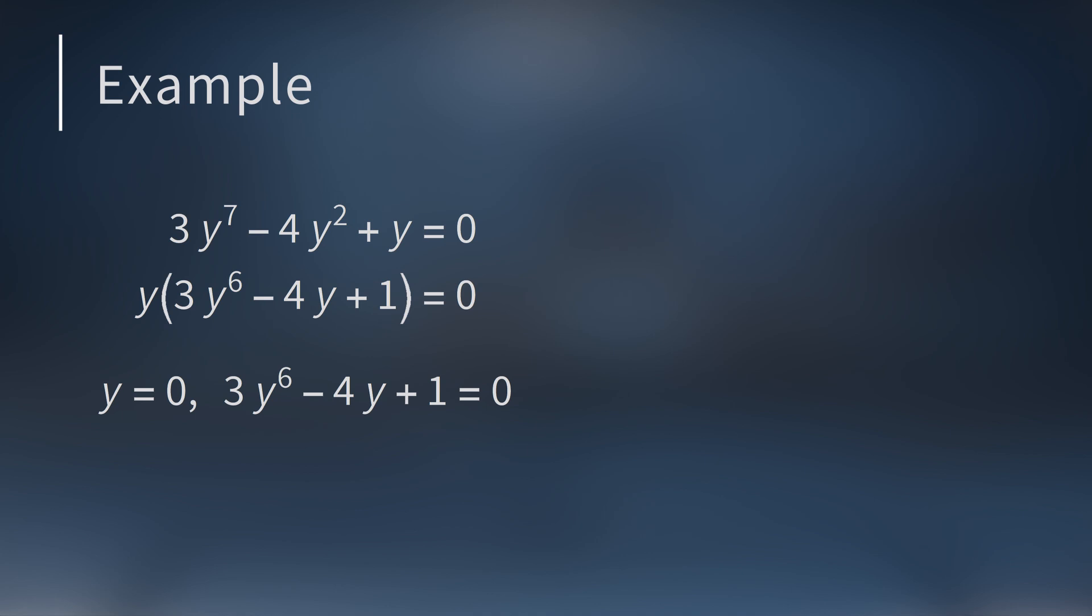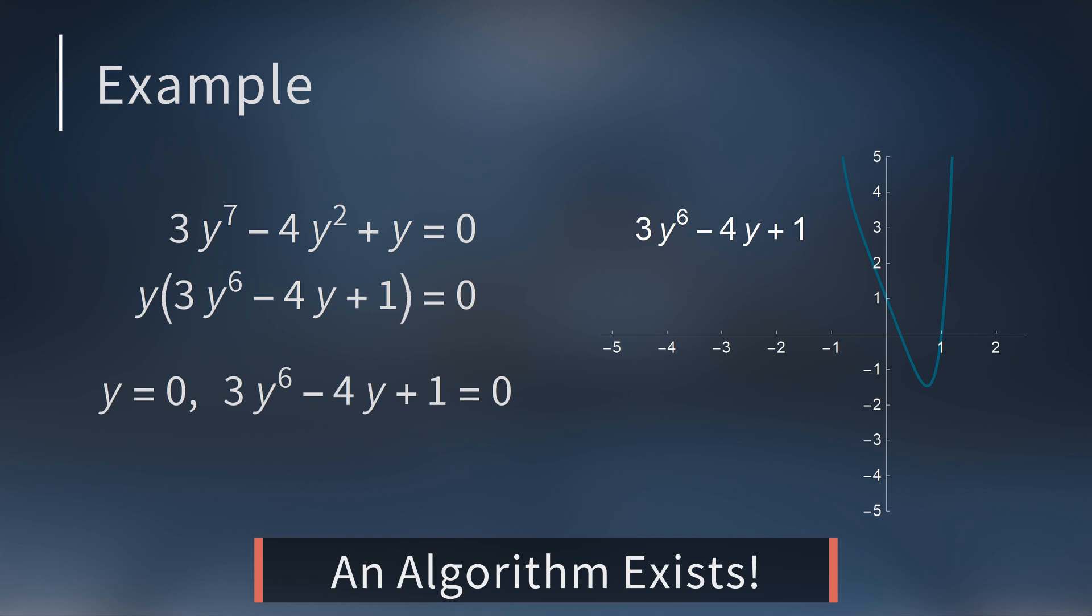But what about the second factor? Is there a straightforward way to tell if 3y to the sixth minus 4y plus 1 equals 0 has an integer solution? You could always graph it and see if it crosses the x-axis anywhere near an integer. The problem with this approach is for very large polynomials, you have to do some work to see how large the graph needs to be. Also, it involves eyeballing the graph. It would be much better to have a simple, fast algorithm that would find all integer solutions. And it turns out that one such algorithm exists.